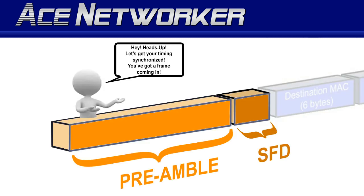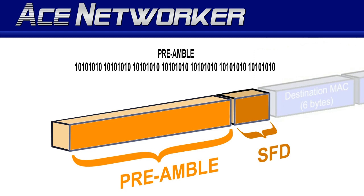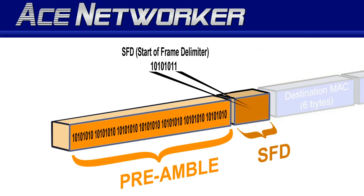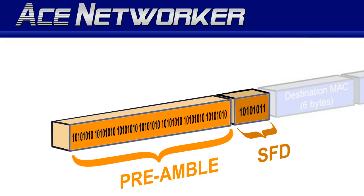Those are the two reasons the preamble is used and needed. Let's take a look at what a preamble actually looks like and how it's made up. An Ethernet preamble is made up of seven bytes of alternating ones and zeros, and it is immediately followed by the start frame delimiter, better known as the SFD. The SFD is one byte long and it ends in one one.